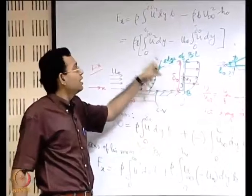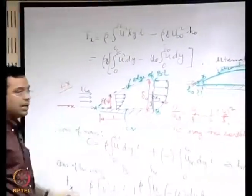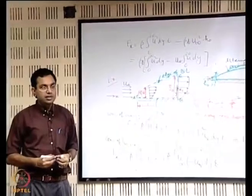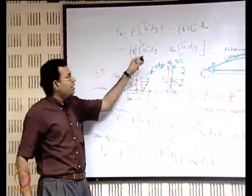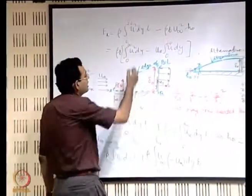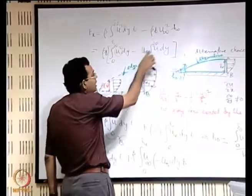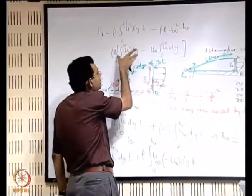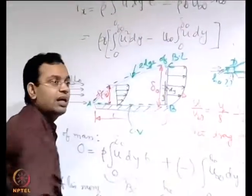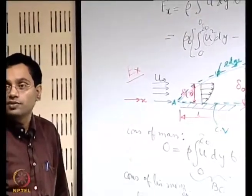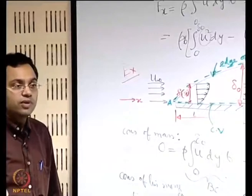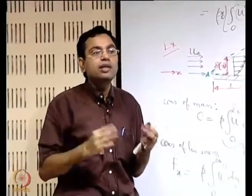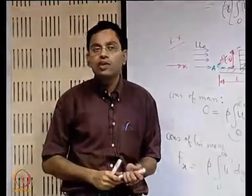The remaining part is straightforward — substitute u as a function of y from the given velocity profile and integrate to find the expression for Fx. This is the force exerted by the plate on the control volume. You can see that u squared is less than u times u_infinity (since u is less than u_infinity), so this term must be negative — confirming it is a drag force that tries to slow down the motion of the fluid. Once you solve a problem you get a sign and you should develop an intuition of what that sign implies. Let us stop here today and we will continue again in the next class.